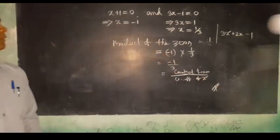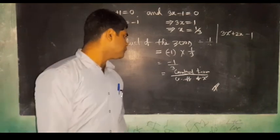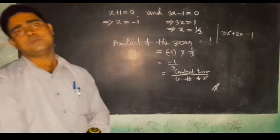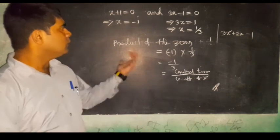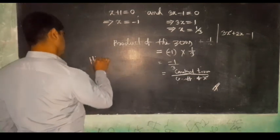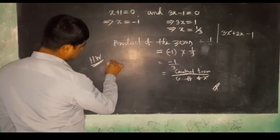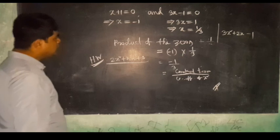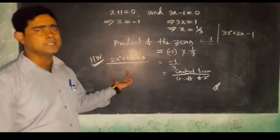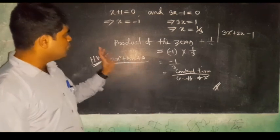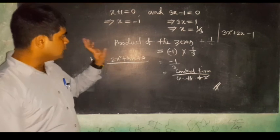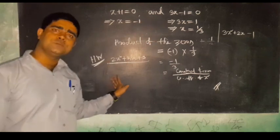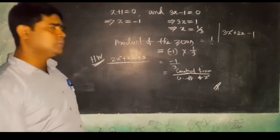Thus we can prove and establish the relationship between the zeros and the coefficients of a quadratic polynomial. As a practice problem, try this for the quadratic equation 2x squared plus 5x plus 3. Find the relationship between the coefficients and the zeros — first find the zeros, then find the sum of the zeros and product of the zeros, and the relationship will automatically come. Thanks for watching.